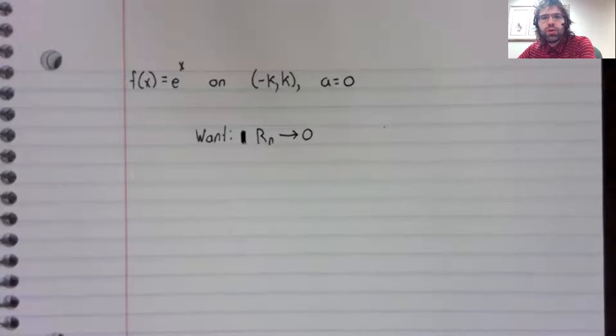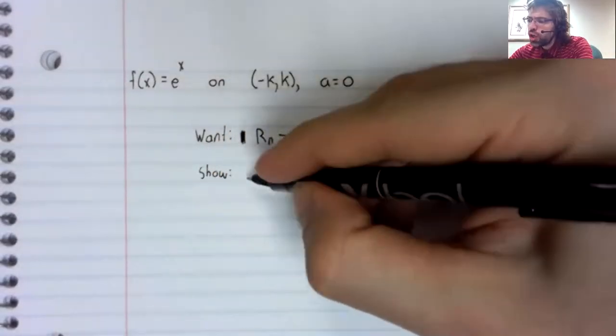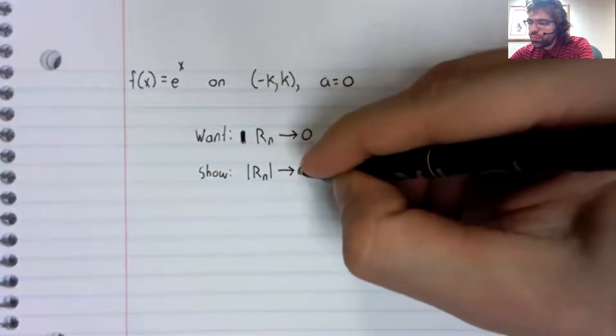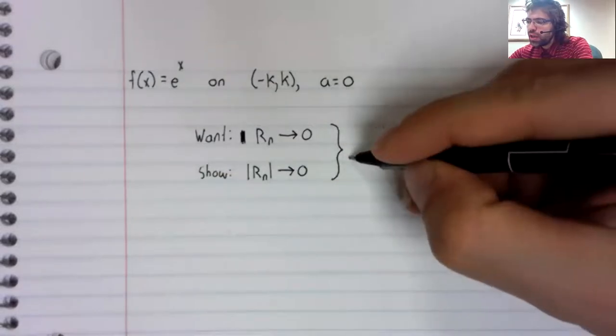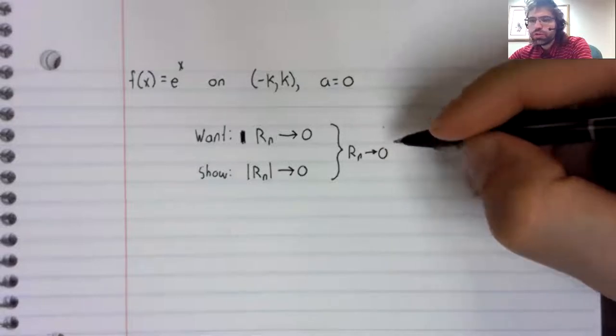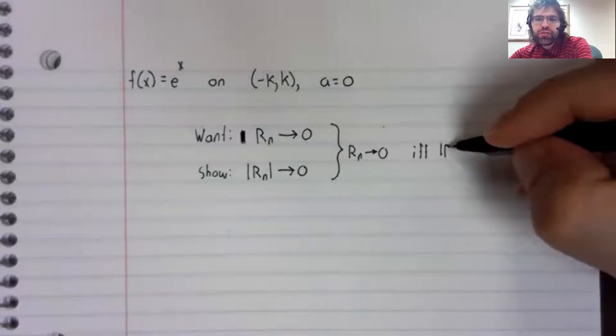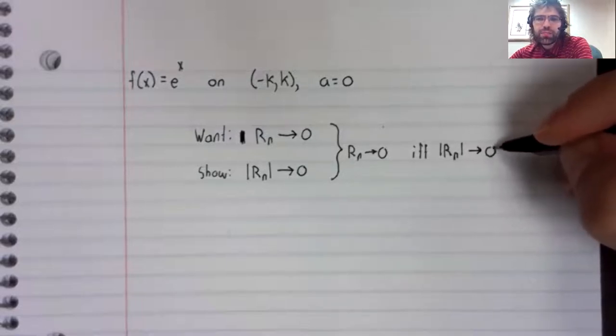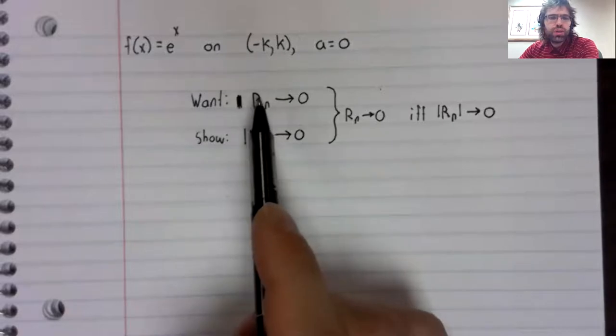For technical reasons, which we'll see later, what we're going to show is that the absolute value of R sub n goes to zero. However, these are the same. The remainder goes to zero if and only if the absolute value of the remainder goes to zero. So showing this will show this.